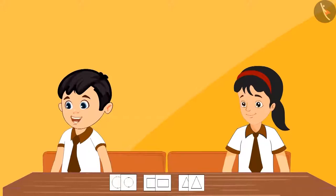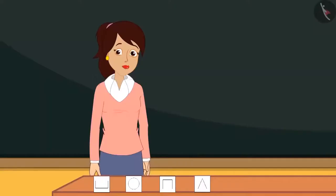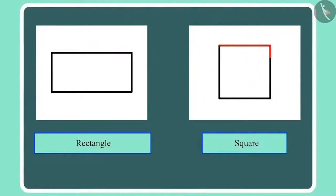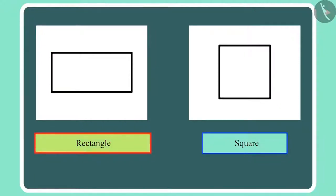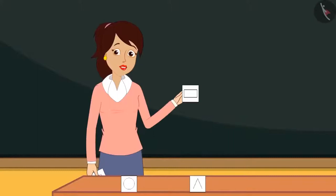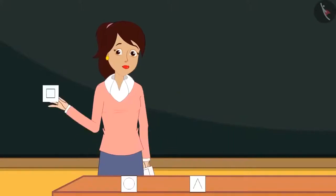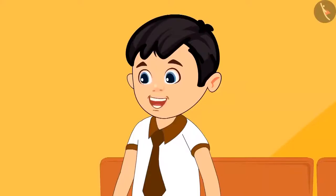Chotu, look carefully — this shape is made of four lines of the same length, that's why we call it a square. And here in this shape, all four lines are not equal — only the lines opposite to each other are equal and the length of adjacent lines are different. We call this a rectangle. This is a rectangle, and this is a square.